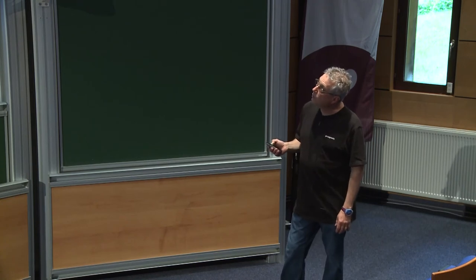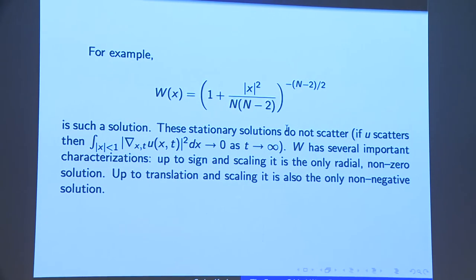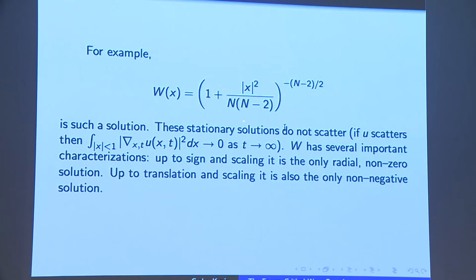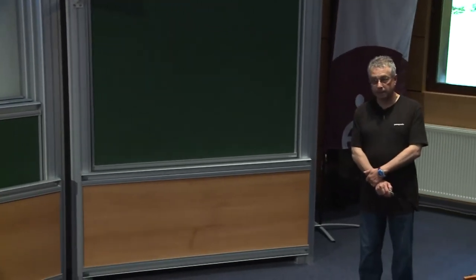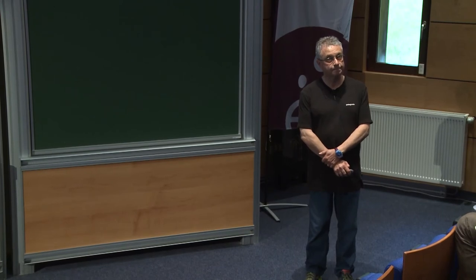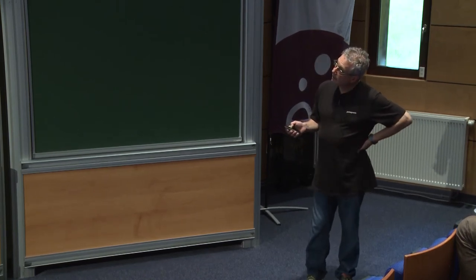This stationary solution has interesting properties. First, up to sign and scaling, it is the only non-zero radial solution to this elliptic problem — a theorem going back to Pohozaev in the mid-sixties, and then Gidas and Nirenberg in the late 1970s. For radial solutions, we know them explicitly.